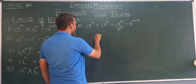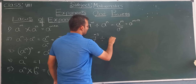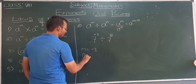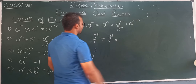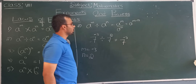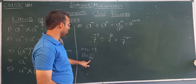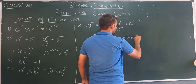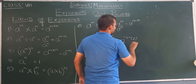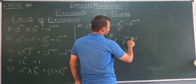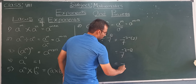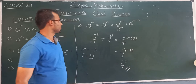One more example: 7 to the power minus 3 divided by 7 to the power 2. Here m is minus 3 and n is 2. Applying a to the power m minus n, we write 7 to the power minus 3 minus 2. Since n is positive (plus 2), plus and minus gives minus. So the answer is 7 to the power minus 5.